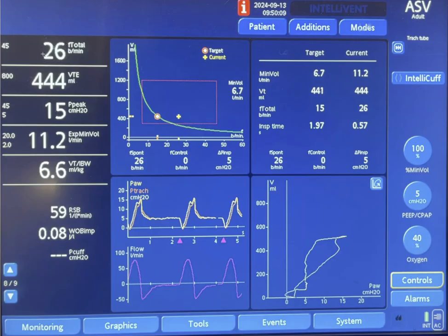You can see this is the respiratory rate of 26 per minute. This is the tidal volume. This is the peak pressure. And this is the minute ventilation here. And this is how much tidal volume per ideal body weight.